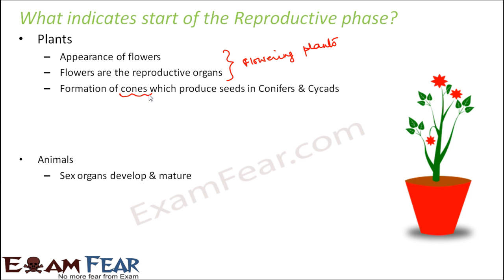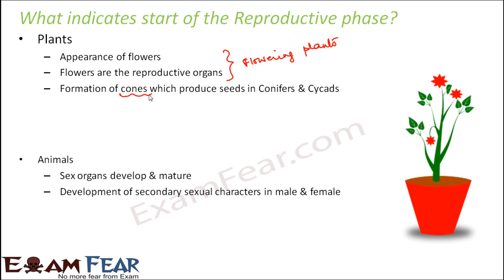In case of animals, the sex organs develop and mature — all the reproductive parts tend to develop, which do not develop initially when they are born. Development of secondary sexual characters in male and female also occurs. In human beings, for example, in males the voice changes and becomes more coarse, and hair appears on the chest, along with beards. In females, the development of breasts and sexual parts occurs, and the beginning of the menstrual cycle takes place. All these things indicate the start of the reproductive phase.